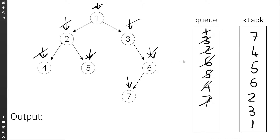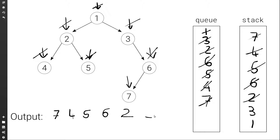We go back to the queue, but this time the queue is empty, indicating we're done. So now we pop the values from the stack and print them as we pop. We print the top — 7 — pop it, print the top, pop it, and continue until the stack is empty. The final output is 7, 4, 5, 6, 2, 3, 1, which indeed is the reverse level order traversal of this tree.